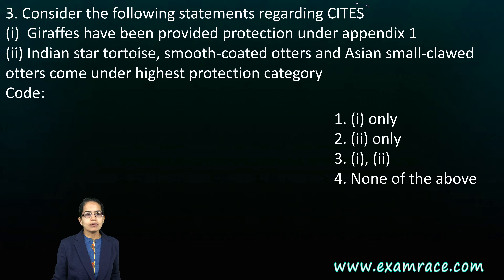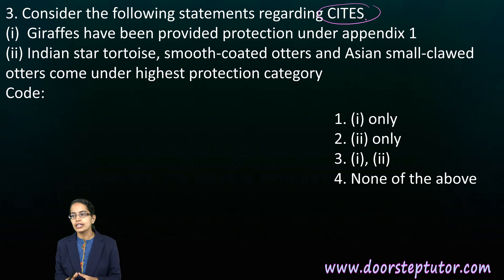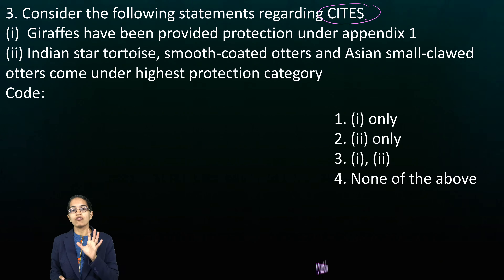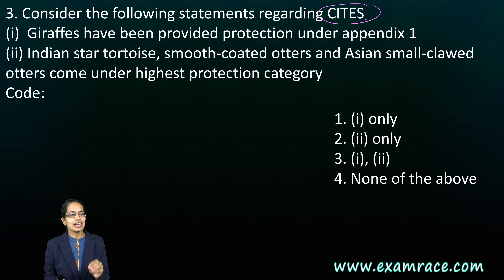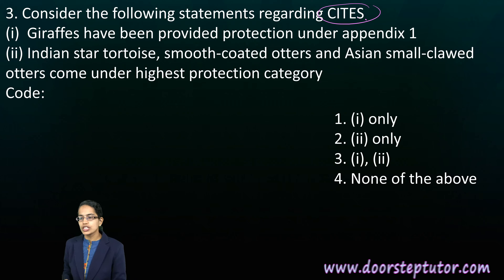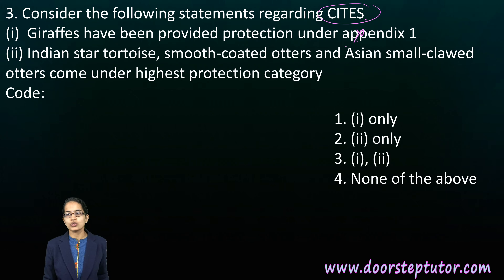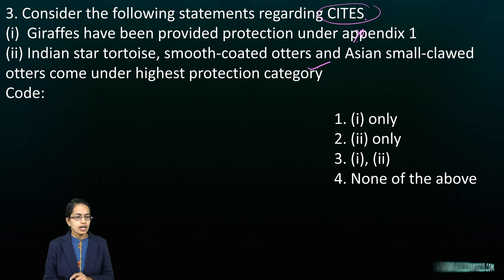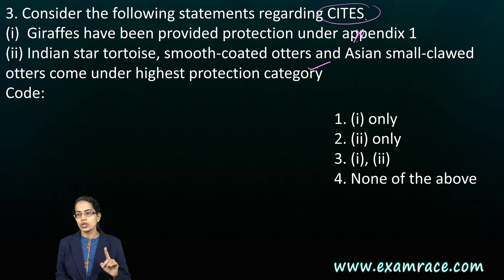The next question talks about CITES. CITES is basically a convention where you are trying to understand the international exchange of species — mainly the endangered animals and plants. Flora and fauna, both plant life and animal life, which are specific to a region and considered endangered under certain categories. Giraffe has been in the news recently, featured in National Geographic as well as Down to Earth, however it has not been listed under Appendix 1, so the first choice is incorrect. The second choice talks about the star tortoise — Asian star tortoises are under higher protection, which is correct.